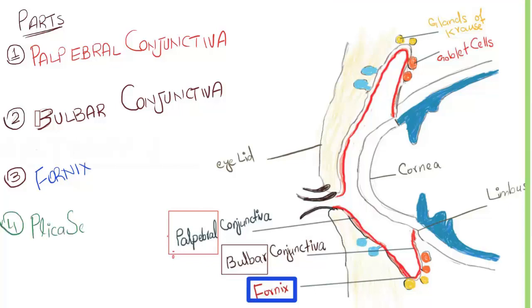Fourth part is plica semilunaris. It is a crescentic fold of conjunctiva situated at the inner canthus.